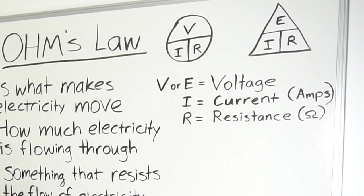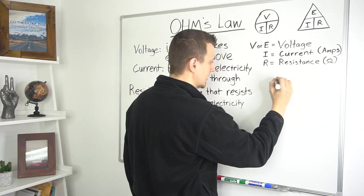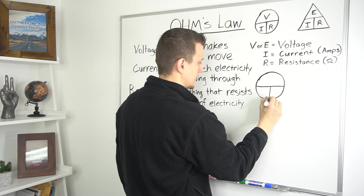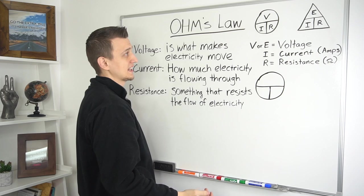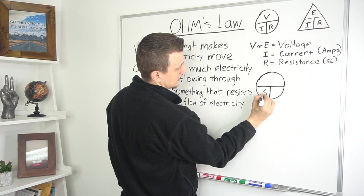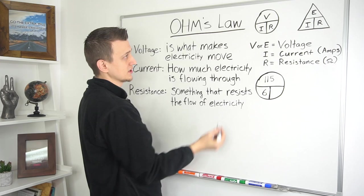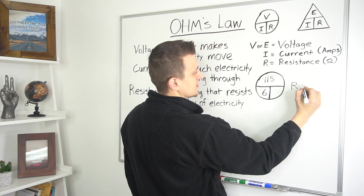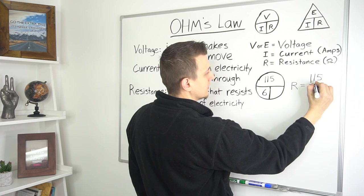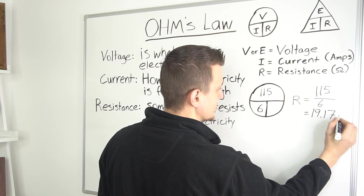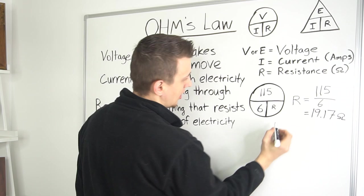So let's draw an Ohm's Law Pi right over here. Do our little sections. And let's say we have a single speed blower motor that is rated at 6 amps. So we can put the 6 where the I is. And we know that the voltage for it is 115 volts. But we don't know what the resistance is. So by using this formula, it would be R resistance equals 115 divided by 6, which would equal 19.17 ohms. Do a little ohm symbol right there. So that would be R, 19.17 ohms.